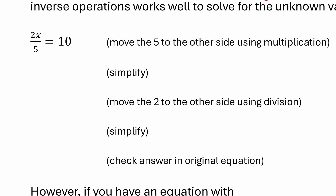We can solve this algebraically by isolating the variable x by rearranging the equation using inverse operations. We look at the x on the left and see what operations are being applied to that x — it's being multiplied by 2 and it's being divided by 5.